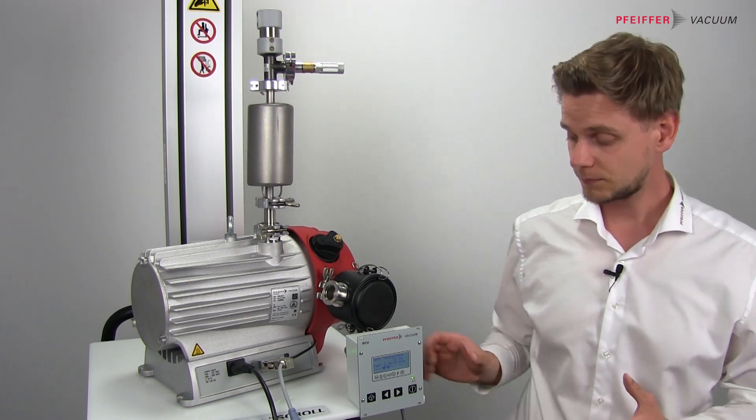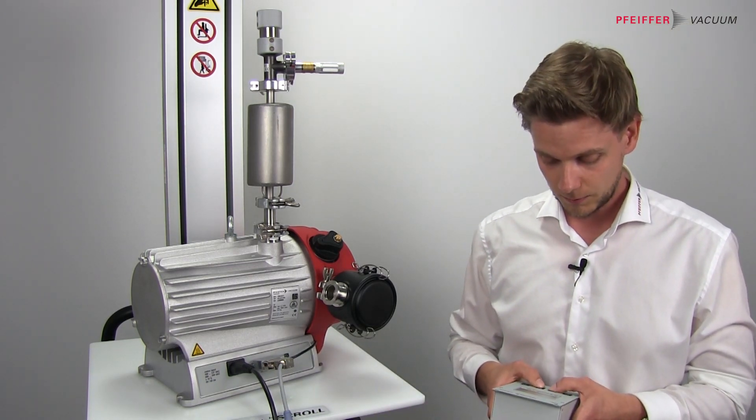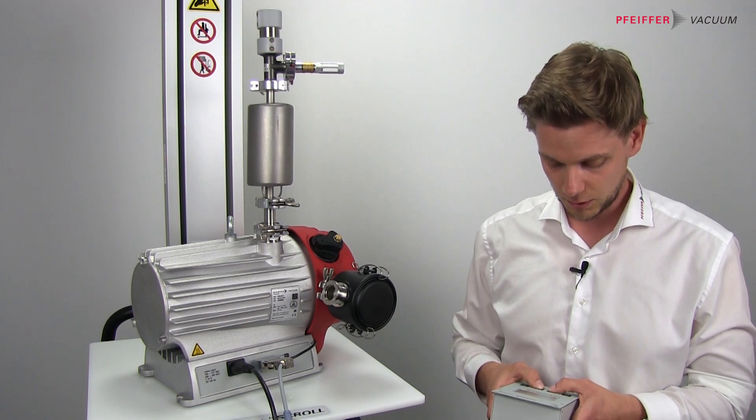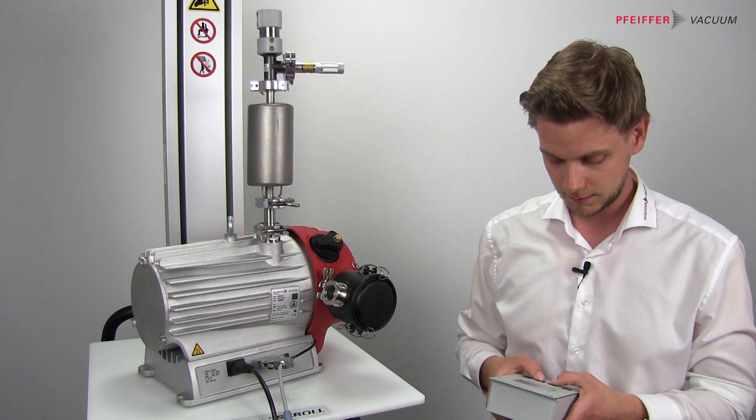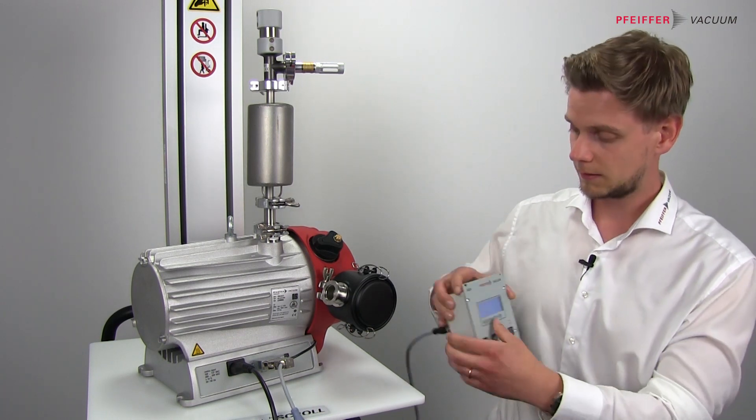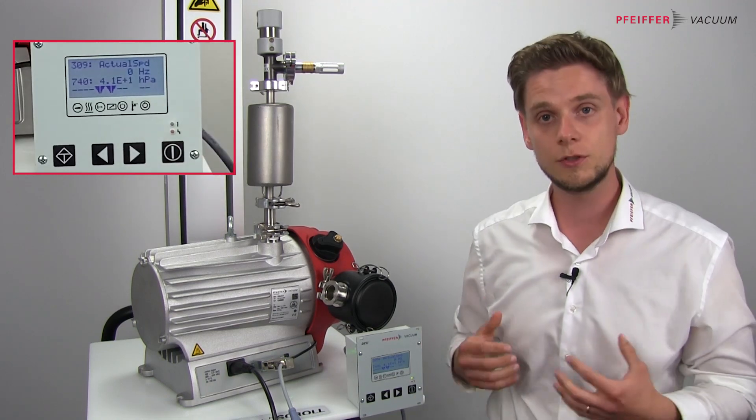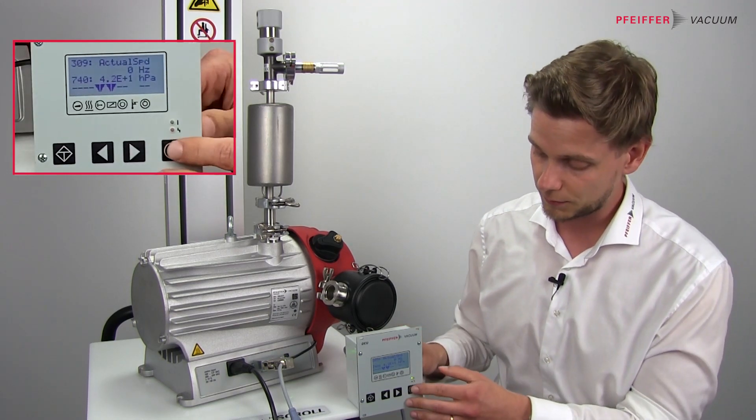Also, I want to show you the auto pressure control. When I activate this, it's parameter 20 I have to activate. I can hold a certain pressure I want to see, in this case three millibar.